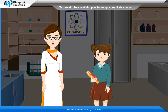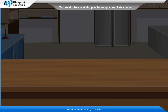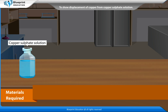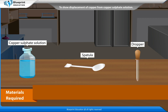Let's perform an experiment to show displacement of copper from copper sulphate solution. The materials required are: test tube, magnesium powder, copper sulphate solution, a spatula and dropper.